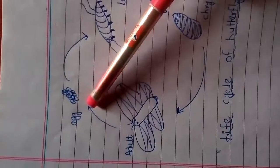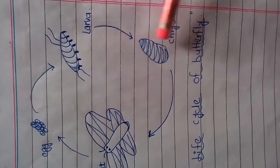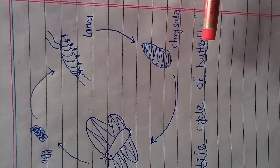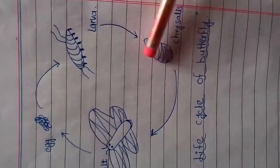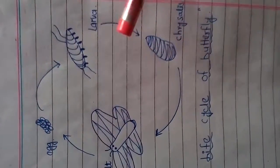From the eggs comes the larva, which is called larva. It becomes a chrysalis, which is formed in the shell of the butterfly, then it changes into the adult butterfly. So this is how you have made your notebook.